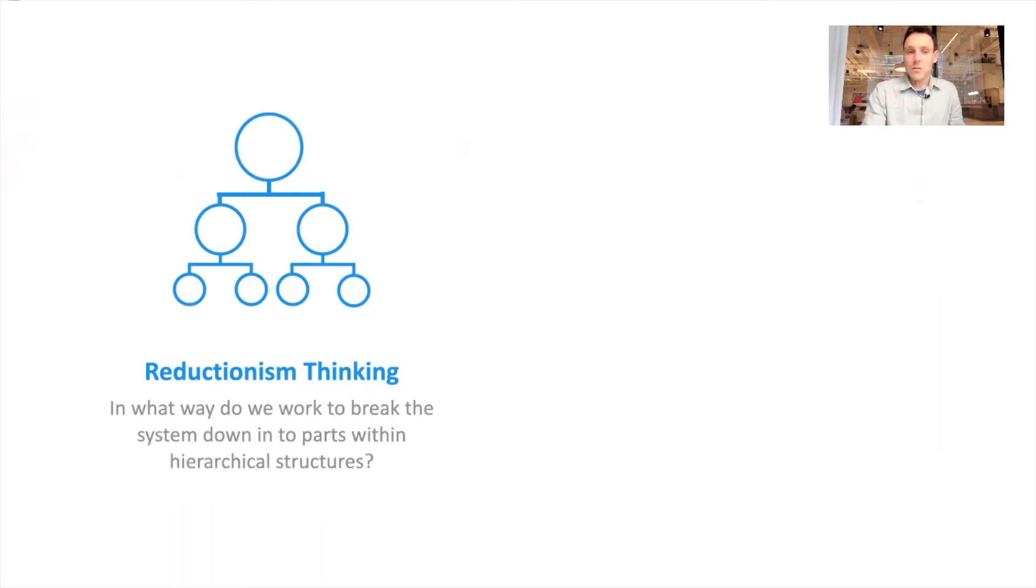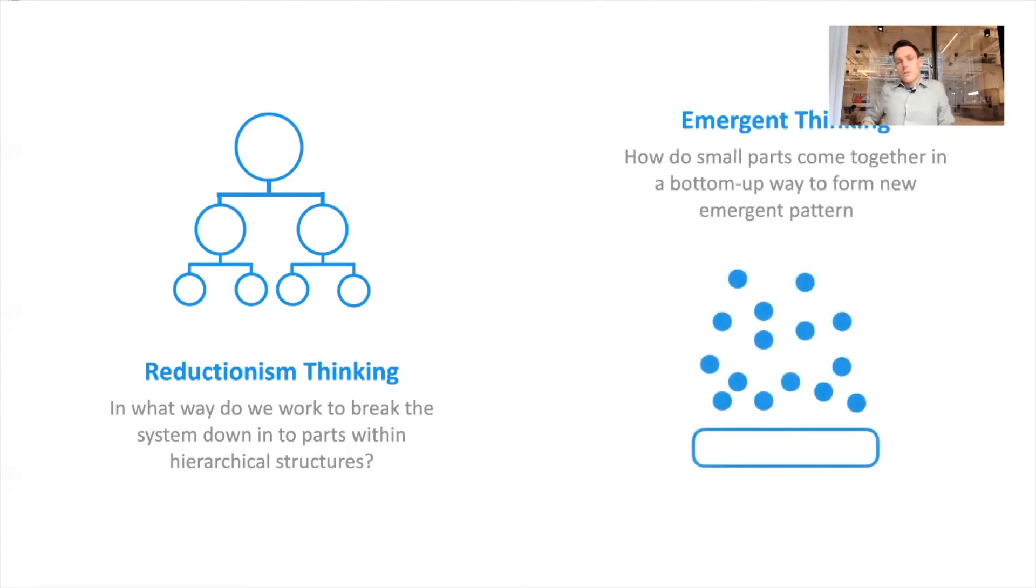Reductionism and emergence. So this, again, a way of looking at things. What does it look like when we look at the system in this reductionist way, this kind of hierarchical way of breaking it down? And then what does it look like from this emergent system, emergent way?